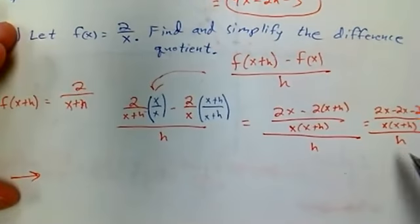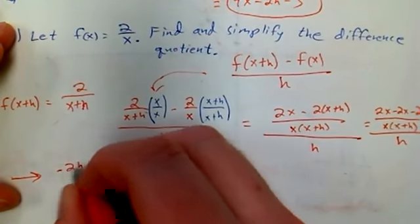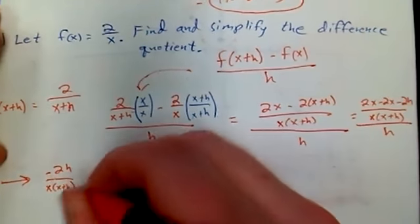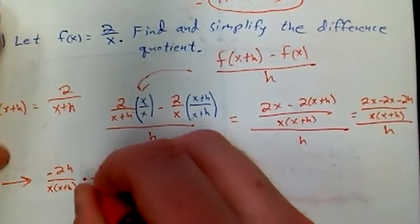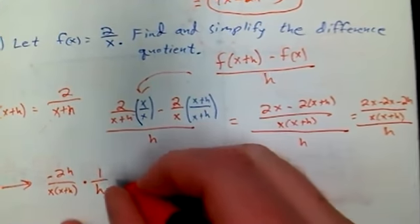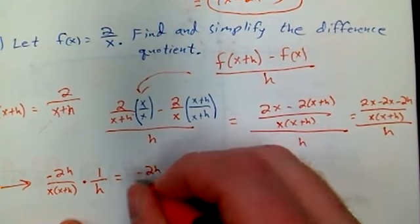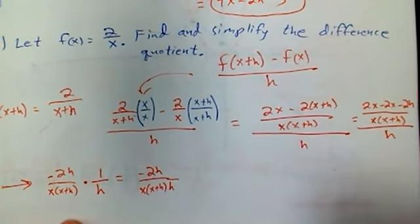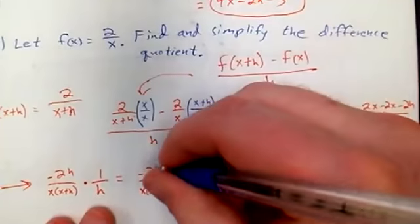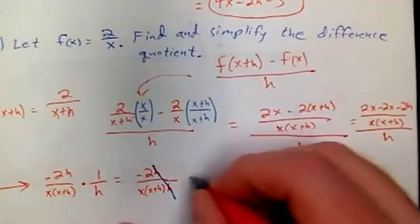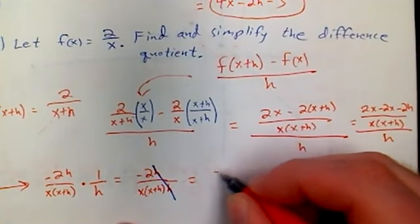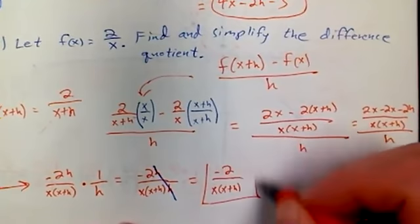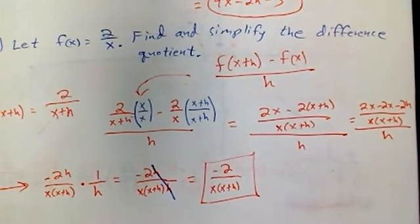So if I continue on, my 2x's here cancel. I'm just left with negative 2h over x times (x+h). Now instead of dividing everything by h, I could multiply by the reciprocal. So that's going to leave me with negative 2h over x times (x+h) times h. And I'm seeing that I can cancel h's. So all in all, the difference quotient is negative 2 over x times (x+h). And that is what we're looking for right there.